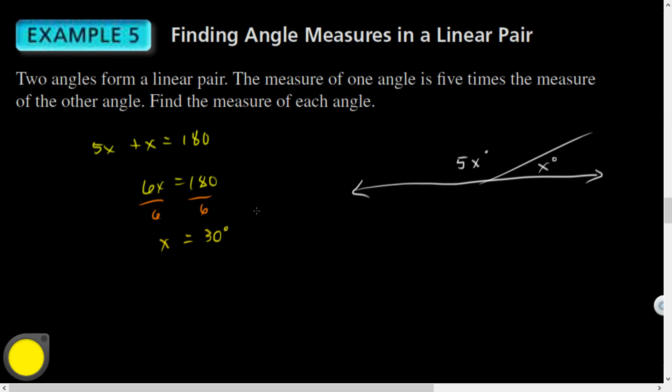X equals 30 degrees. So if this is 30 degrees, what's this one going to be? Yeah, 5 times 30. I guess I could write that out. So 150 degrees. All right, so there you go.